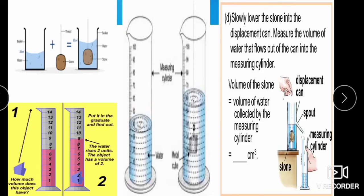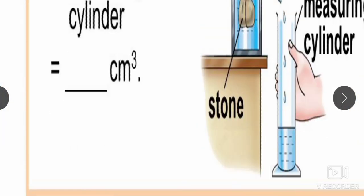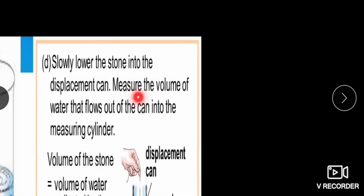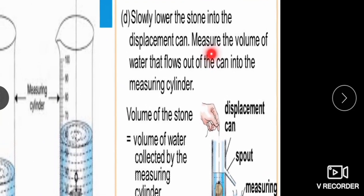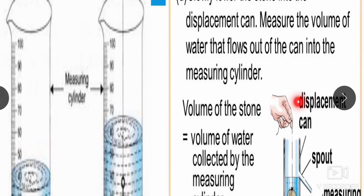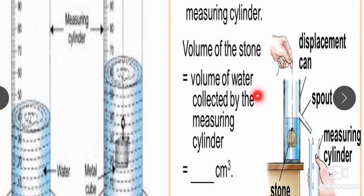There is another example for practice. Suppose we dip an irregular shape object, a stone tied to a string. Before dipping, if the level is up to 200 ml, and after dipping the stone, if the level goes to 260 ml, then the increase is 260 minus 200, which equals 60 ml. This 60 ml is the volume of the stone. Hence, we can calculate the volume of a stone using this experiment. In the next video, we will study about volume, area, and density. Thank you.